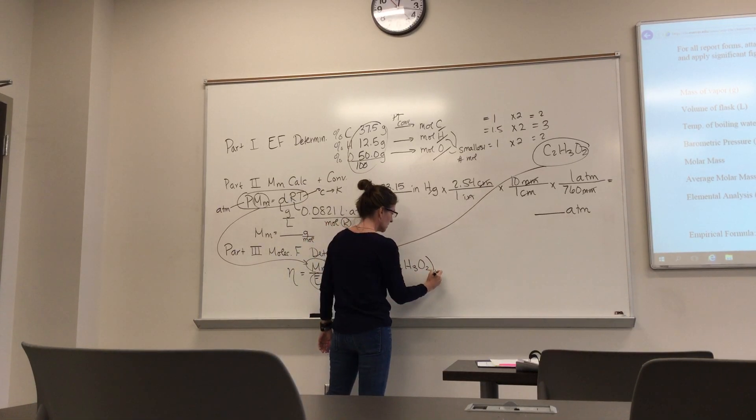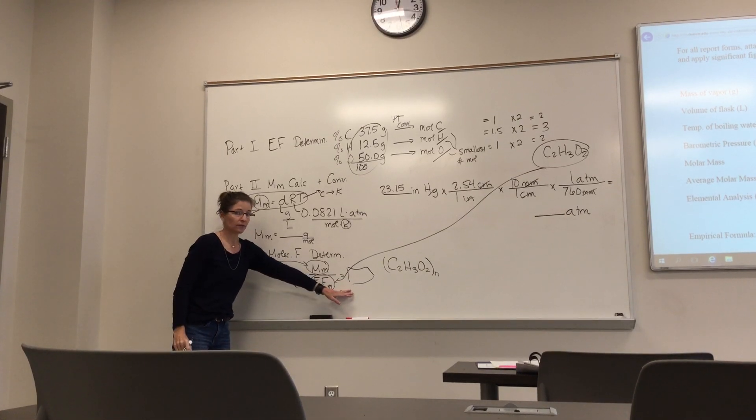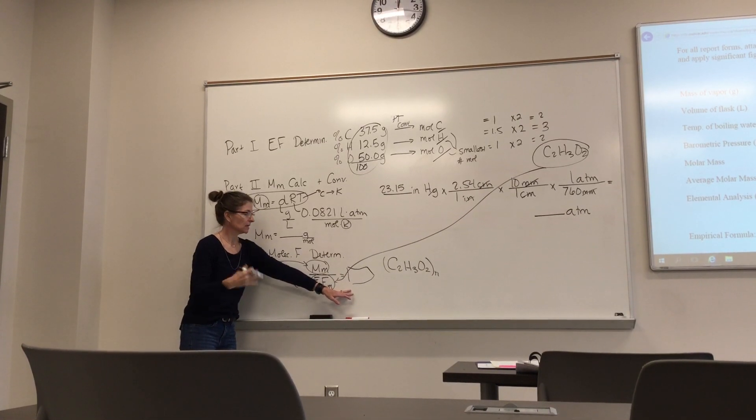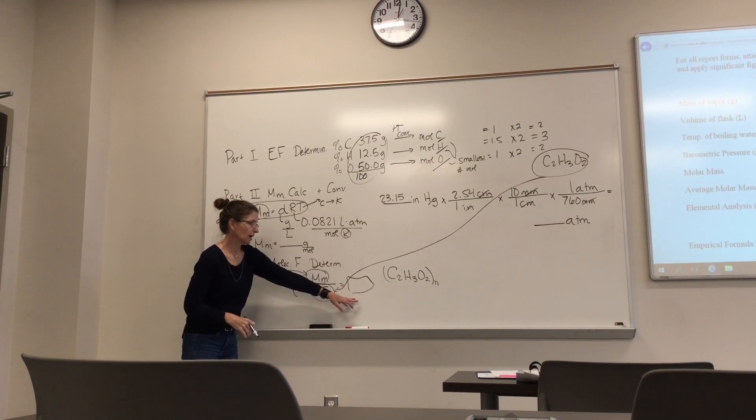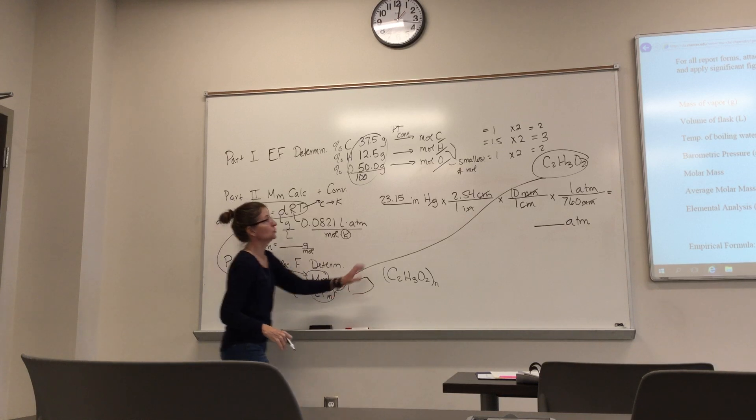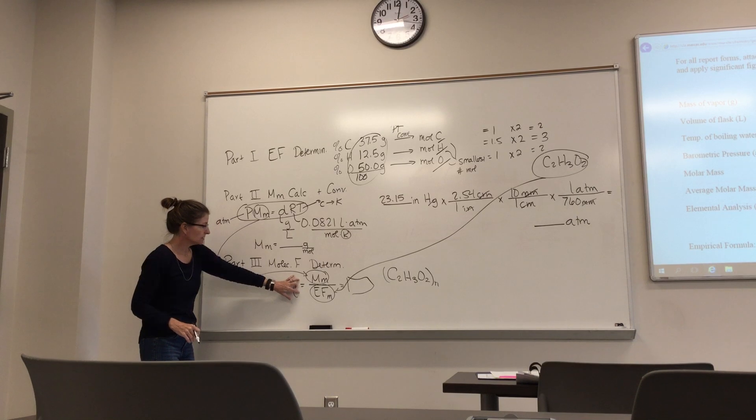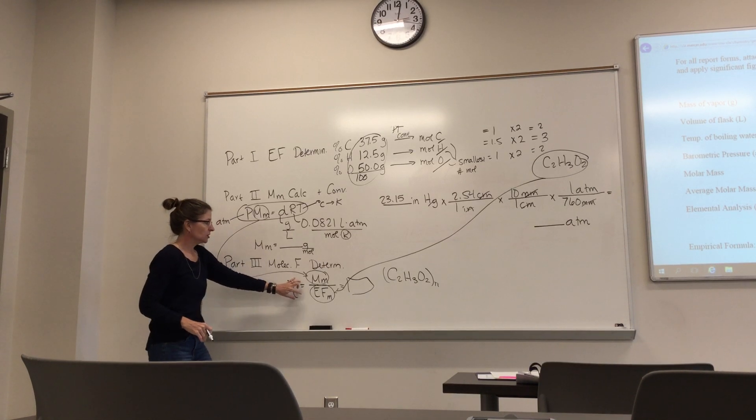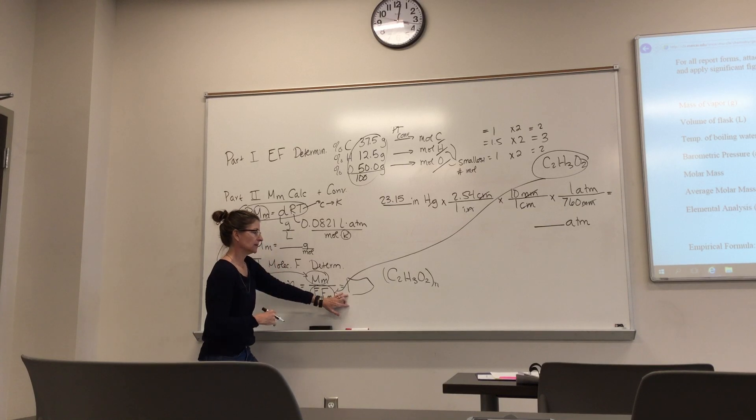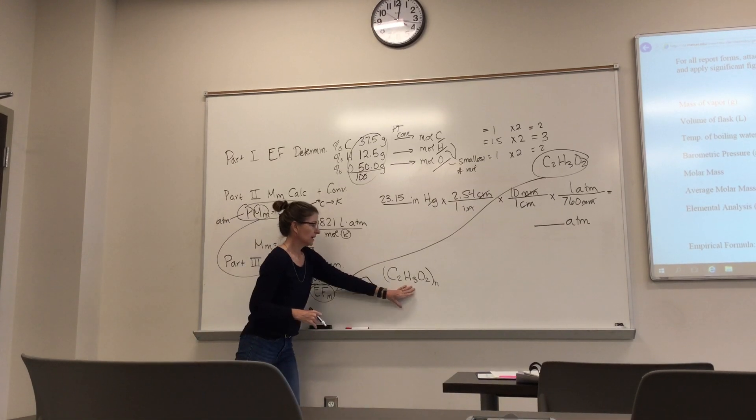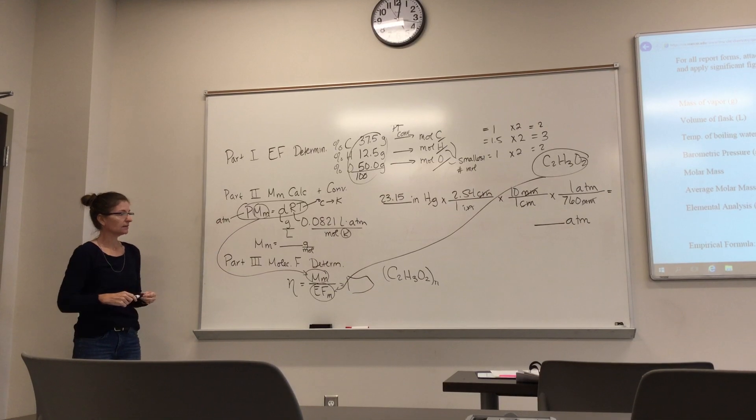That'll tell you how many times that your empirical formula will go into your molecular. So whatever N is, you've then got to multiply by N. Again, this area, you will round it. So if it's 1.8, you will round it to 2. If it's 1.2, you will round it down to 1. So this is where you'll round. You will not round up here. Remember that. They're two very different. This is experimental data. You're not going to necessarily get exactly 2.000 or something like that. So look at your data, reconcile it, and finish off your molecular formula. And that's your lab report.